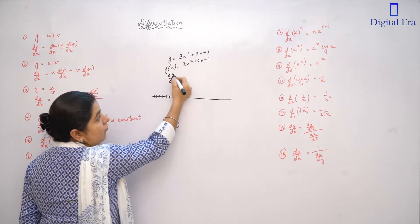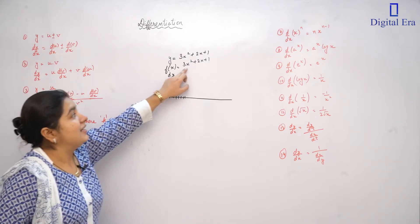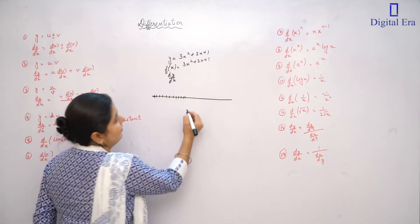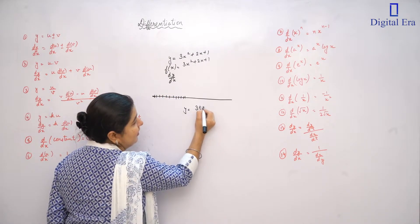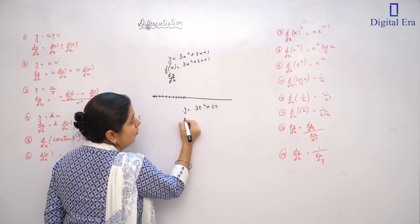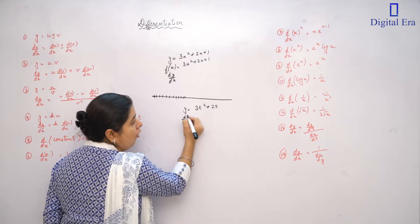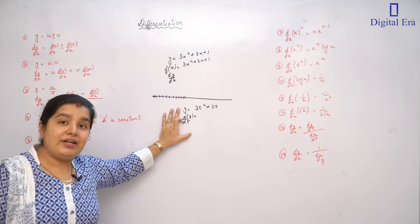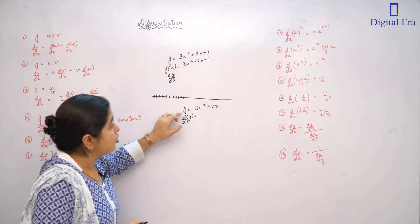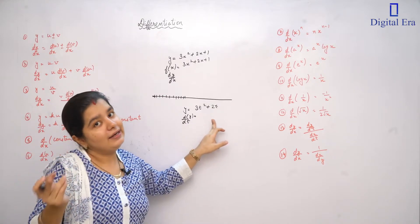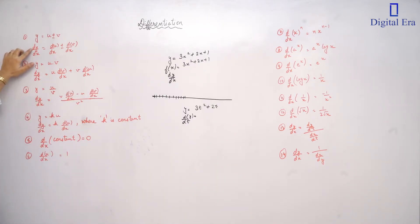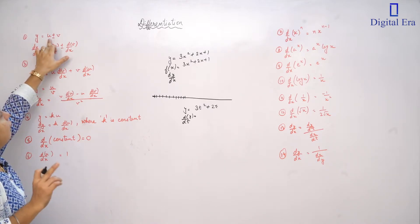The variable in the function must match the variable we differentiate with respect to. For example, if y equals 3t squared plus 2t, then we take the derivative of y with respect to t, because the function of y is in terms of t. If we have y equals u plus v, then we take the derivative of y.